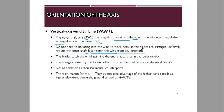VAWTs are not as common or commercially viable as horizontal axis wind turbines. The main reason is that they do not take advantage of higher wind speeds at greater heights. Horizontal axis wind turbines can be built very tall, capturing faster winds at higher elevations, while vertical axis wind turbines cannot take advantage of wind at high elevations, limiting their commercial popularity.